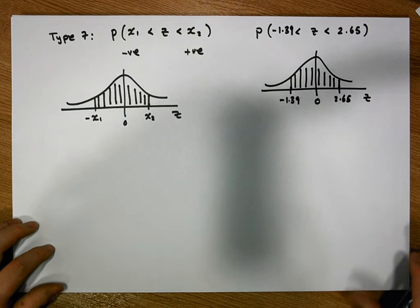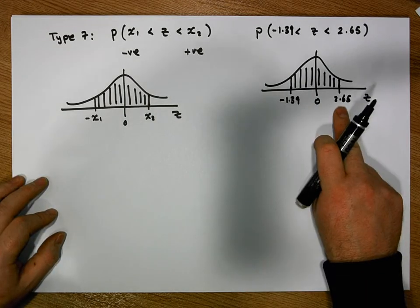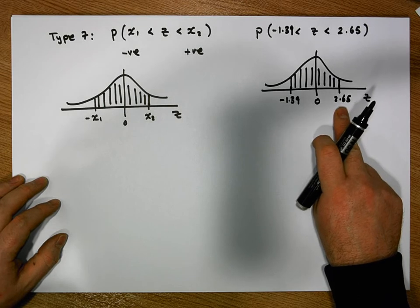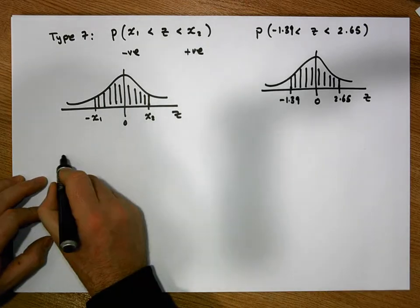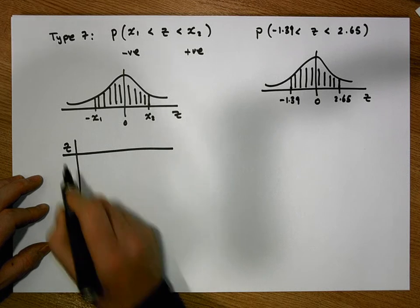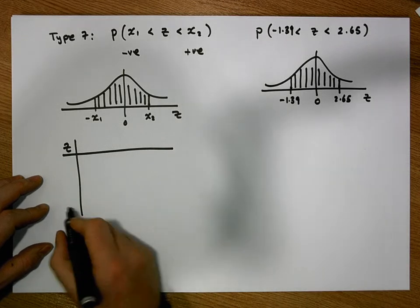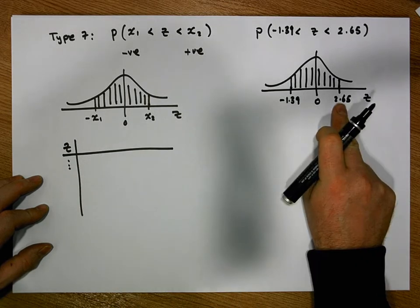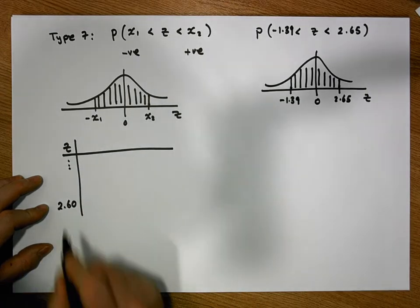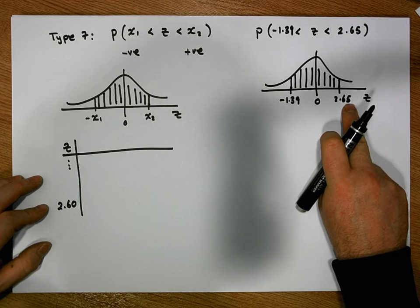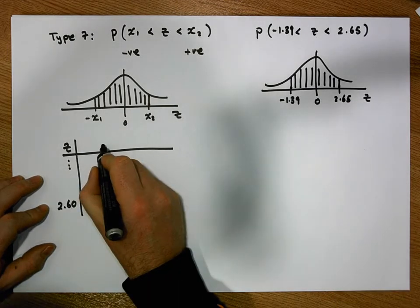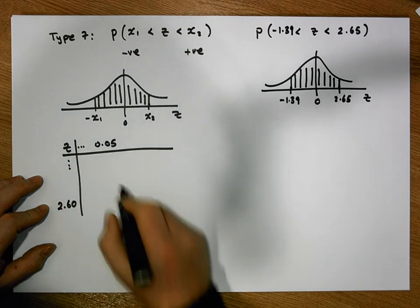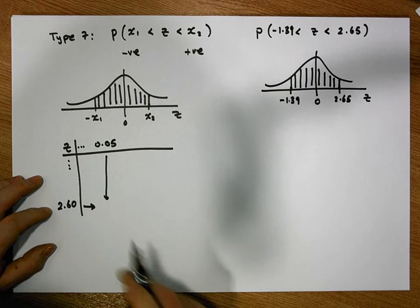We're going to do this in stages. First, we look up our positive value because we can always look up positive values. The positive value here is 2.65. We go to our z-tables and look up 2.65: the first significant digit and first decimal digit gives us row 2.60, and the second decimal digit is 5, so we come across to column 0.05.